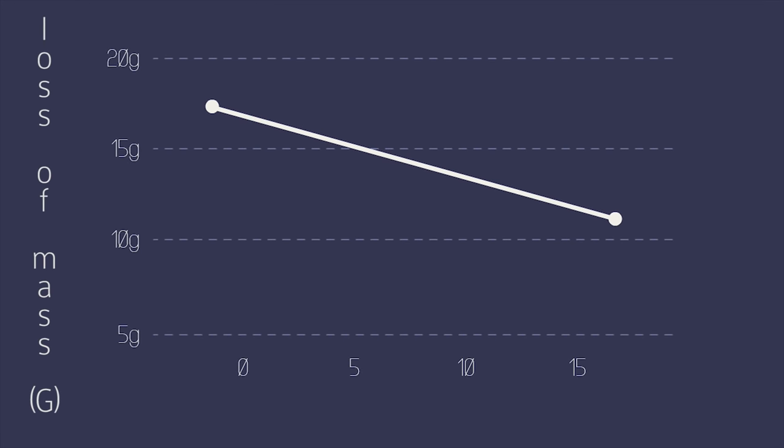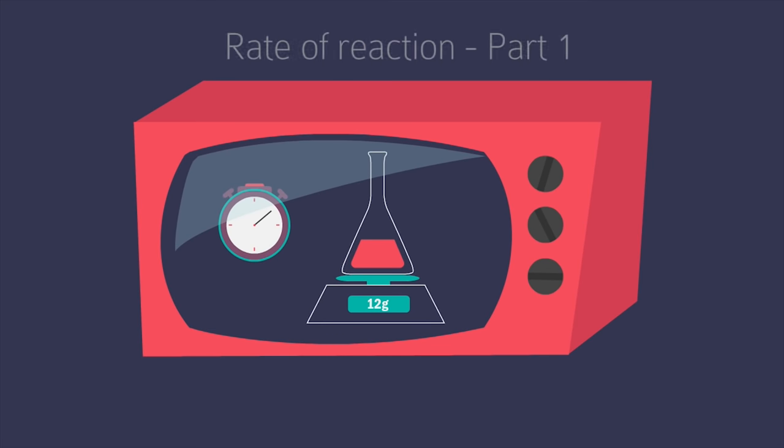You could then plot a graph of loss of mass versus time to see how you can use this to work out the rate of a reaction. See this video also on our channel.